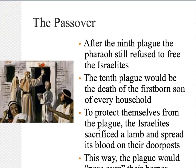Here we have the most famous story to come out of Exodus — the story of the Passover. After the ninth plague, the Pharaoh still refused to set the Israelites free. So the tenth plague would be the most serious: the death of the firstborn son of every household. To protect themselves, Moses instructed the Israelites to sacrifice a lamb and spread its blood on the doorposts, so that the plague would pass over the houses of the Israelites, only killing the firstborn of the Egyptians. This is where we get the term Passover — one of the most important celebrations in Judaism even to today.